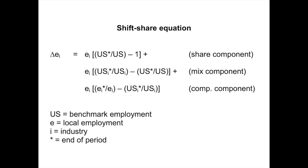The share component — the amount of growth or decline needed for the industry in a region to maintain its share of the benchmark economy — is calculated by multiplying the local industry employment at the beginning of the period, E_i, by the growth rate of overall employment in the benchmark economy, that's U.S.* divided by U.S., and you subtract one from that. The mixed component — the amount needed to keep up with the industry in the benchmark economy — is calculated by multiplying E_i by the growth of industry employment in the benchmark economy (U.S._i* divided by U.S._i) minus the growth of overall employment in the benchmark economy (U.S.* divided by U.S.).